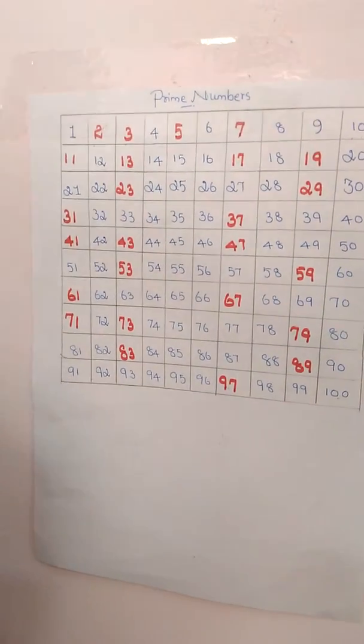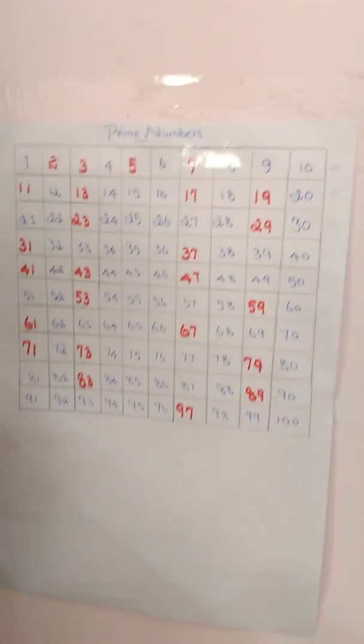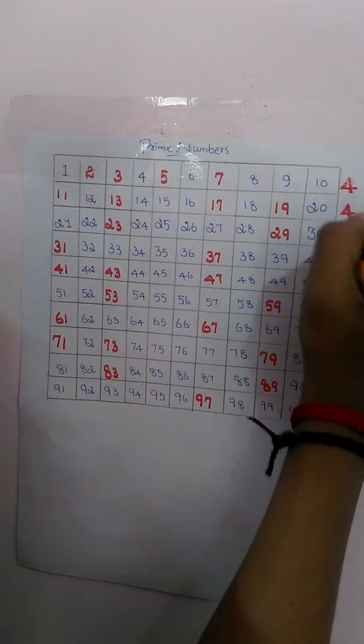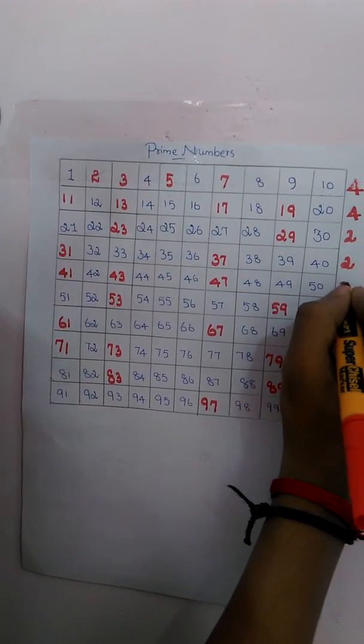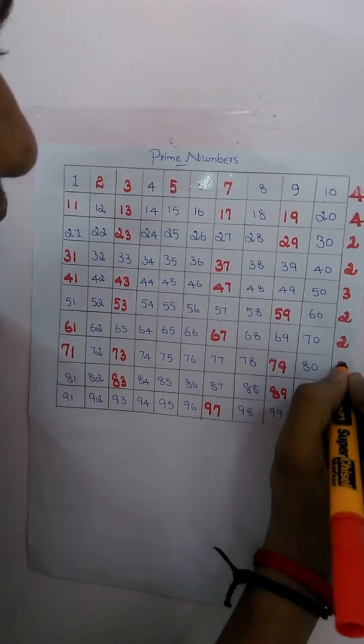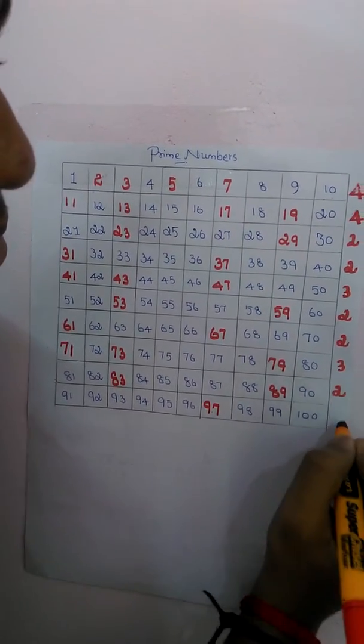There is a phone number to find the prime number. The number is double 4, double 2, 3, double 2, 3, 2, 1.